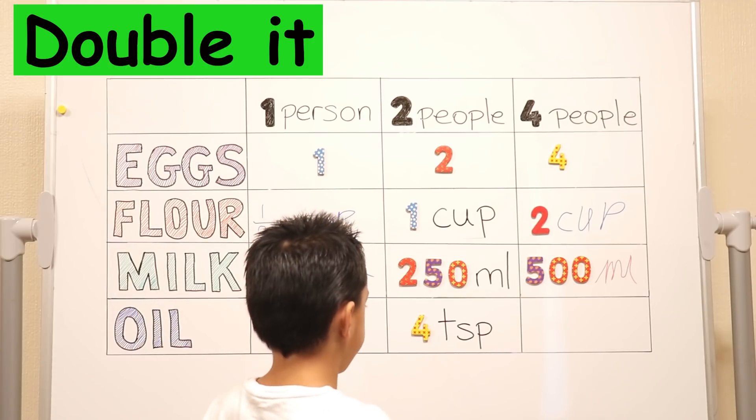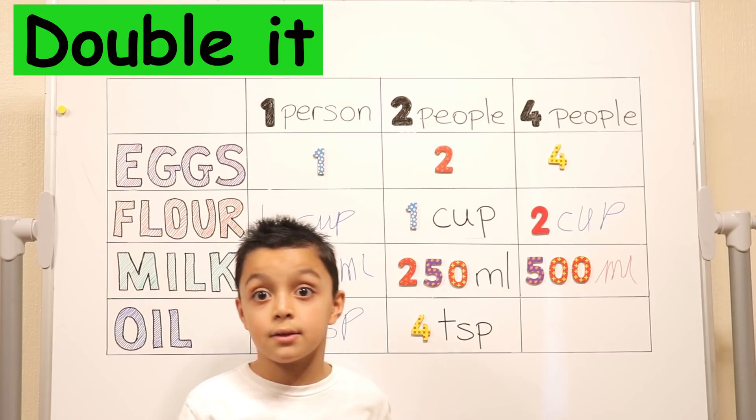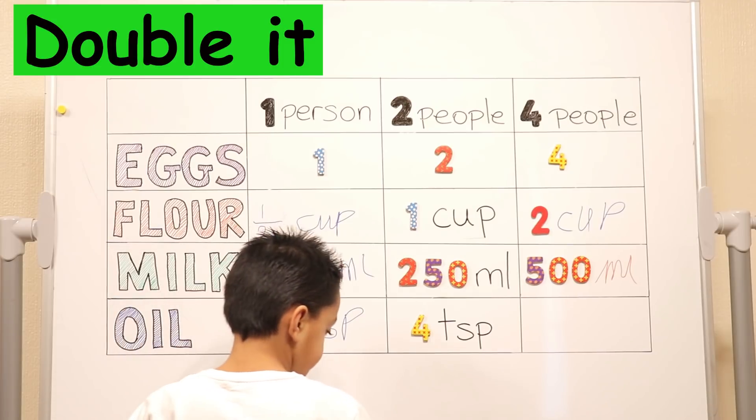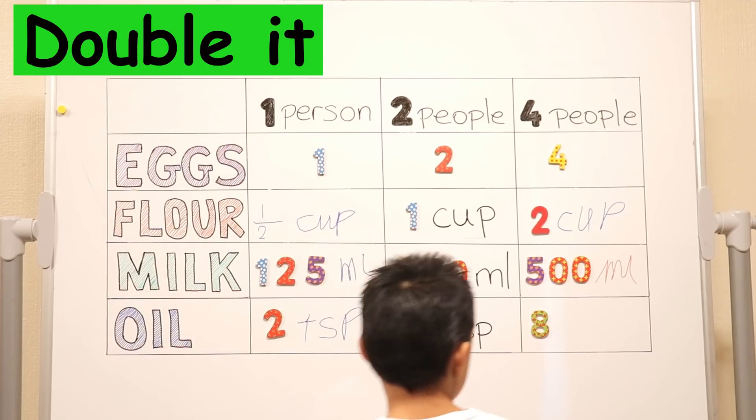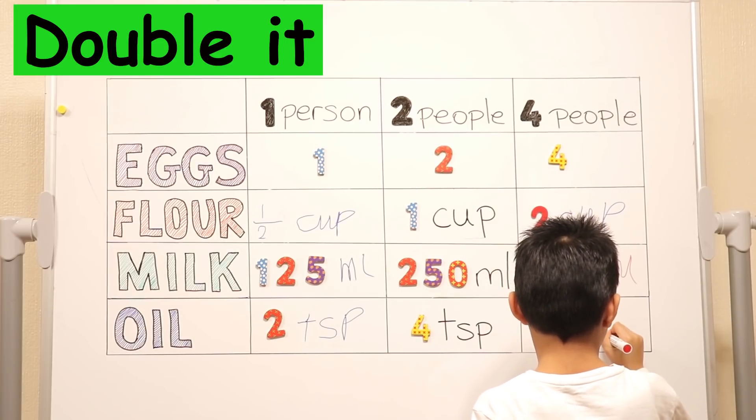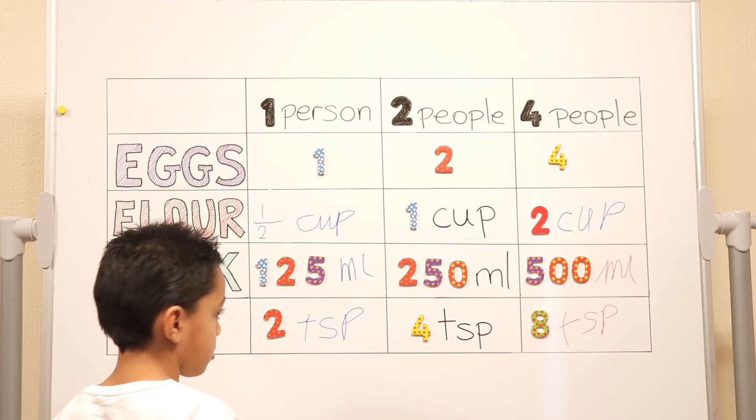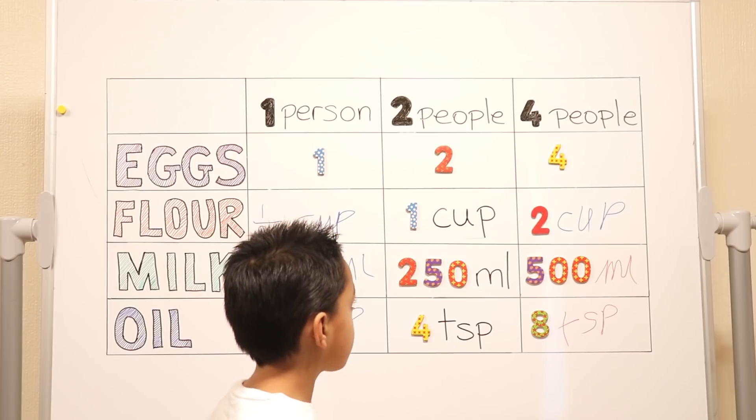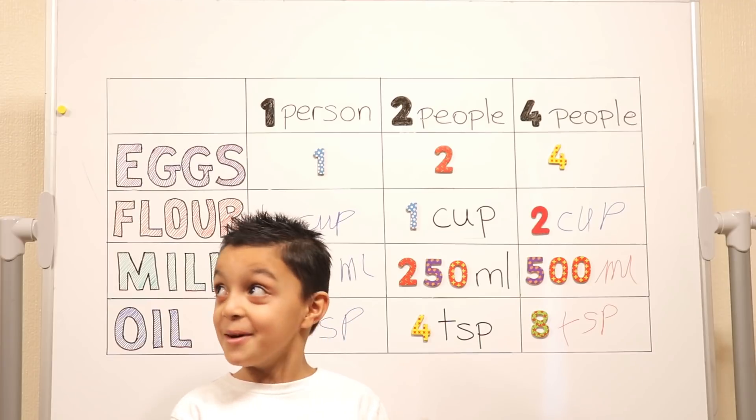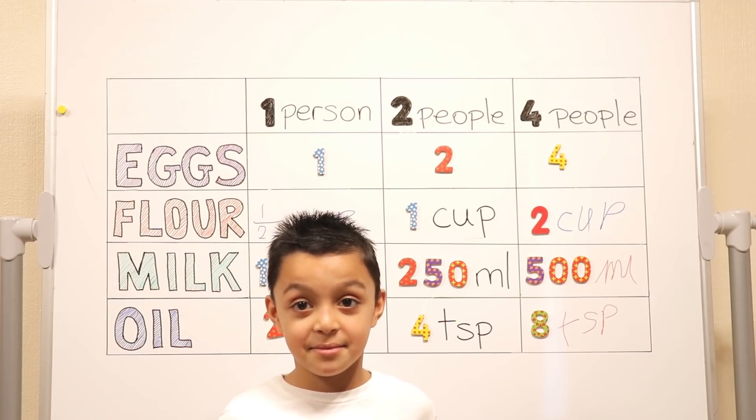And what about the oil? Teaspoon because double four is eight. Excellent. And today Niall you're going to be making pancakes for two people. For you and me. Okay. Is that okay? Should we get started? Yeah. Let's get started right now.